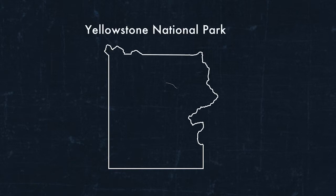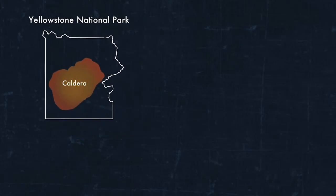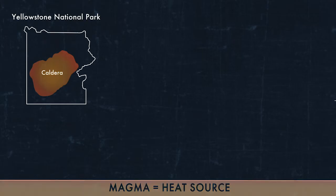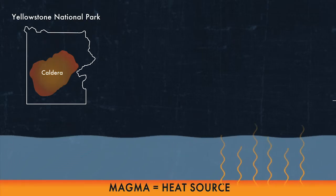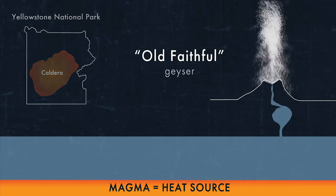This same concept happens on a much larger scale at active volcanoes, such as the one found in Yellowstone National Park. Hot magma stored inside the Earth acts as a giant stove and heats up water beneath the Earth's surface. The hot water rises and forms spectacular thermal features.